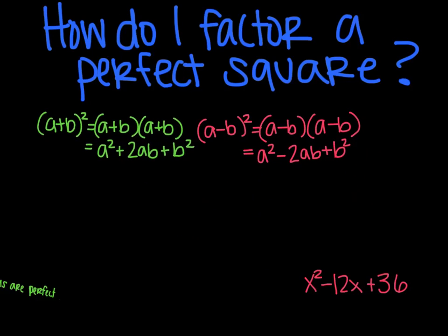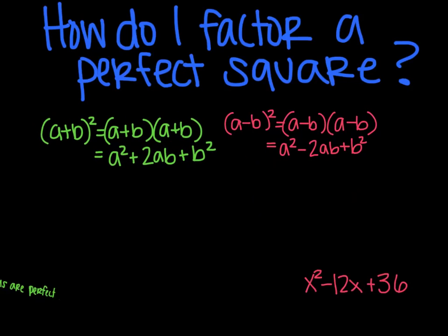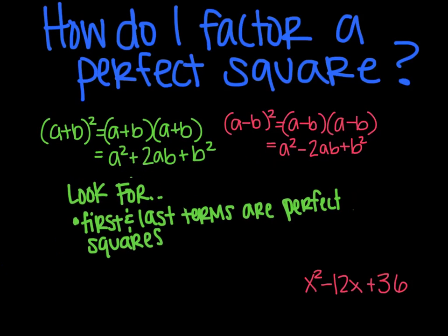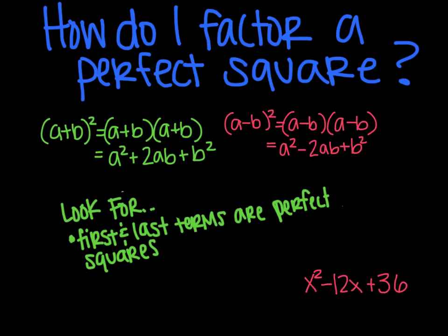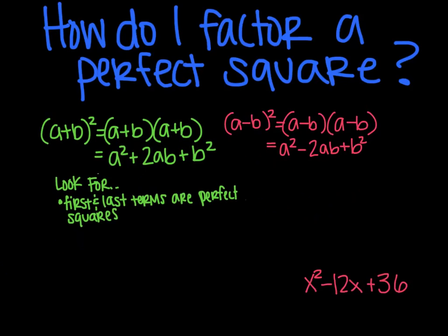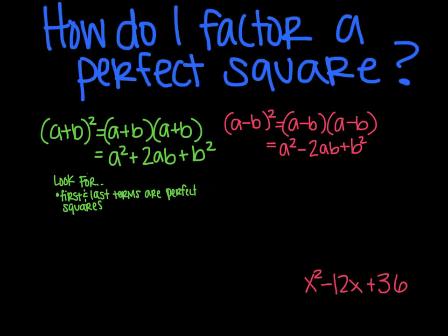When you are looking for perfect squares, they will follow these rules. Something to look for is that the first and the last terms are perfect squares - like a 4 or a 9 or an 81, and that the a term is being squared. The other thing to look for is that the middle term, the b term, which would be the ab part, is twice the product of one factor from the first term and one factor from the last term. That's why it says 2 times a times b.